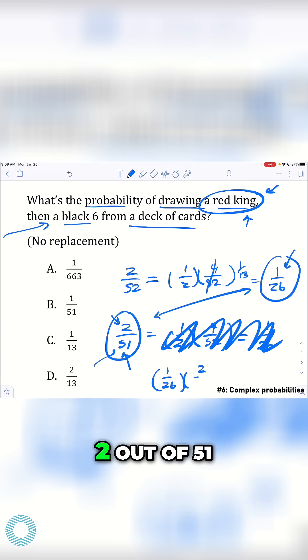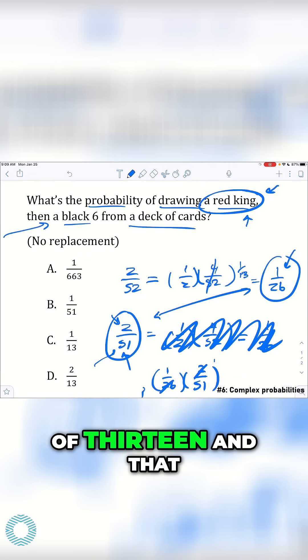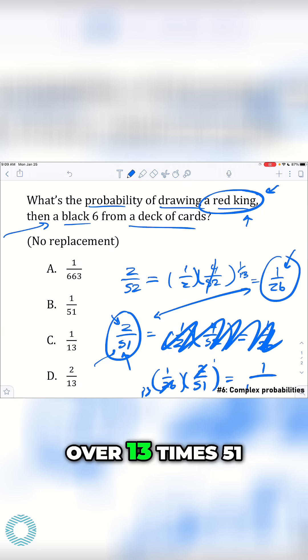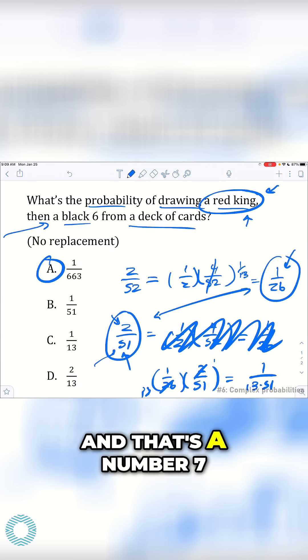1 out of 26 times 2 out of 51. The 2 and 26 cancel. You get 1 out of 13. And that just comes to 1 over 13 times 51. And that's A.